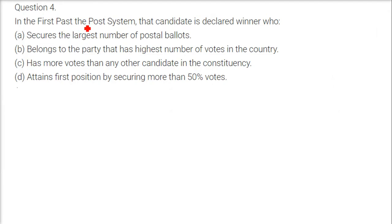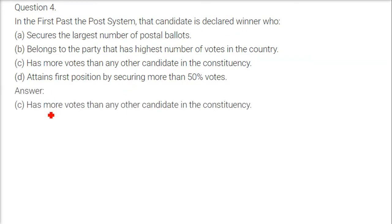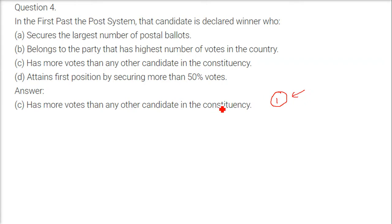In the First Past The Post system, the candidate who has more votes than any other candidate in the constituency is declared the winner. Even if he has just one vote more than the other candidate, he is going to win.